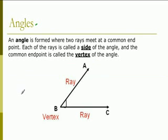An angle is formed where two rays meet at a common endpoint. Both of the rays are called sides of an angle, and the common endpoint is called the vertex of an angle.